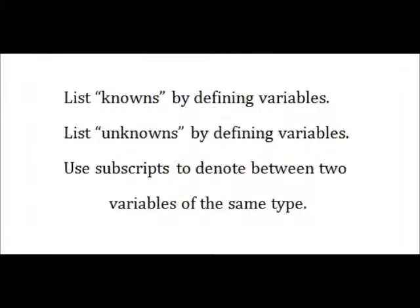Next, make two lists. First, make a list of knowns, that is, all the information you are given. Then make a list of unknowns, all relevant information you might need to solve the problem and what you are trying to find. Use variables to define each item. You can use subscripts to differentiate between variables of a single type, such as two rates or two distances.